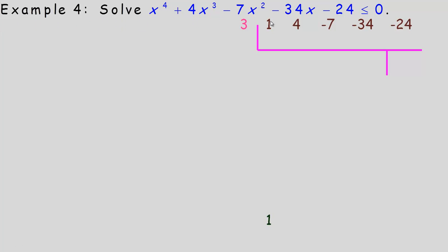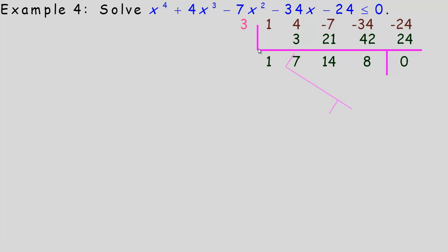The value 3 works: bring the 1 down; 3 times 1 is 3; 4 and 3 add to 7; 7 times 3 is 21; add to negative 7 to get 14; 14 times 3 is 42; add to negative 34 to get 8; 8 times 3 is 24, and negative 24 plus 24 is 0. So x minus 3 is a factor, and we still have a cubic: x cubed plus 7x squared plus 14x plus 8.